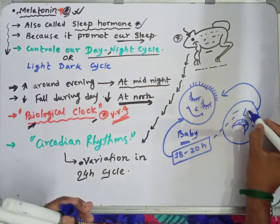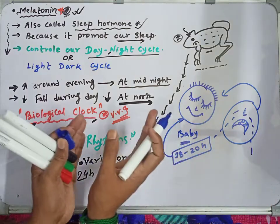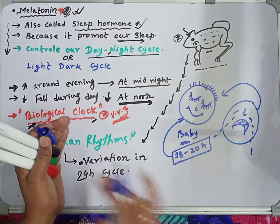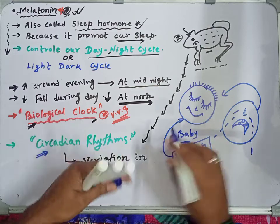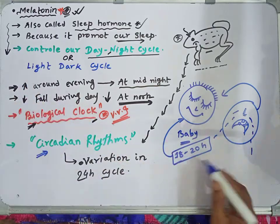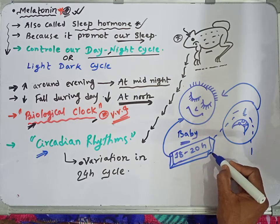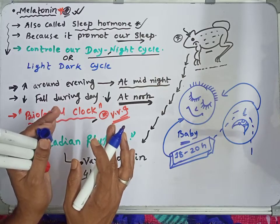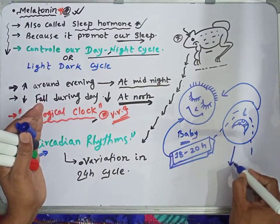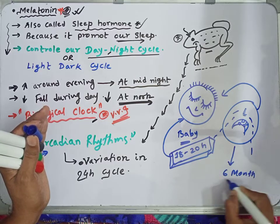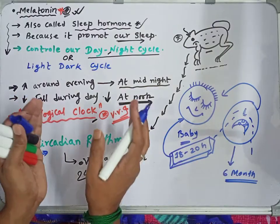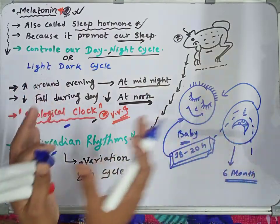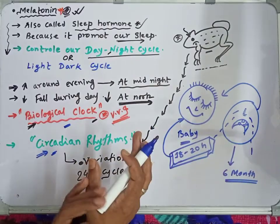The baby keeps sleeping, then wakes up and sleeps again — that is its circadian rhythm. The baby's biological clock and circadian rhythm are not yet synchronized with the environment. After about 6 months, the baby's pineal gland sets properly and the circadian rhythm slowly adjusts, so the baby's activity gradually increases.